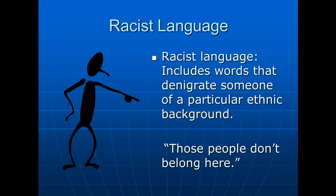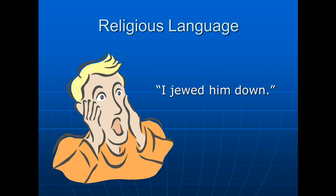We have to look out for racist language, including words that denigrate someone of a particular ethnic group. In academic writing, we don't want anything that implies 'us and them,' such as 'those people don't belong here' — that is a put-down. We also need to watch for religious language. There is an offensive expression where people say 'I jewed him down' rather than 'I negotiated,' which carries terrible stereotyping and is clearly inappropriate in academic writing or speech.